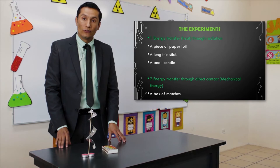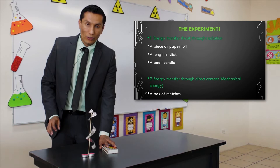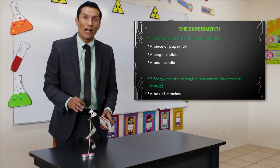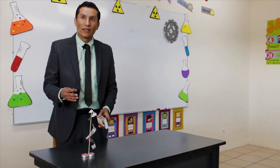I'm going to show you our first experiment. To do it, we need a piece of foil, a couple of candles, a wooden stick, and a box of matches to light the candles. Through this experiment, I'm going to show you how energy is transferred from one object to another — from a hot object to a cooler object — and how heat energy can change into work.